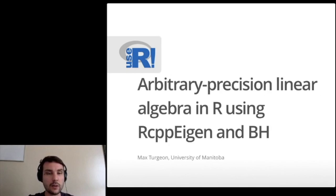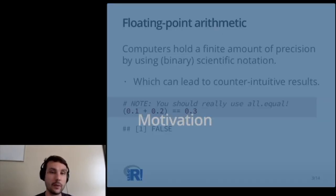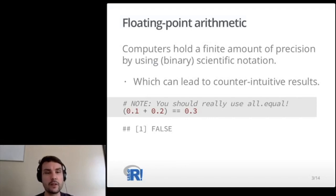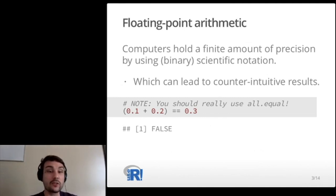I want to talk about the motivation for doing arbitrary precision linear algebra, but first I want to talk about what I mean by arbitrary precision. The best starting point is to talk about floating point arithmetic, which is how computers hold a finite amount of precision when they do computations. They achieve this by using a form of scientific notation in binary. It's very important to understand this because it can lead to counterintuitive results.